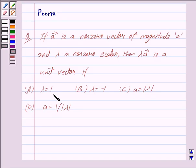A, lambda is equal to 1. B, lambda is equal to minus 1. C, A is equal to mod lambda. D, A is equal to 1 upon mod lambda.